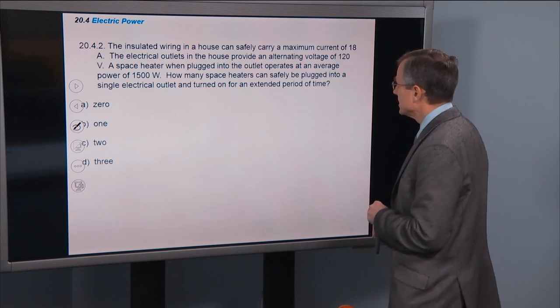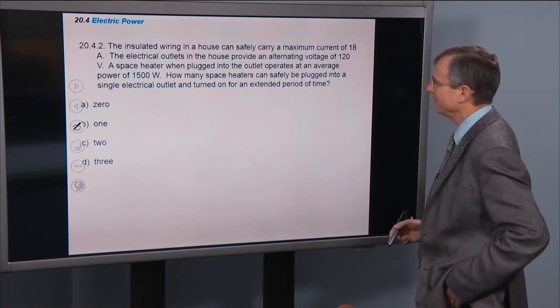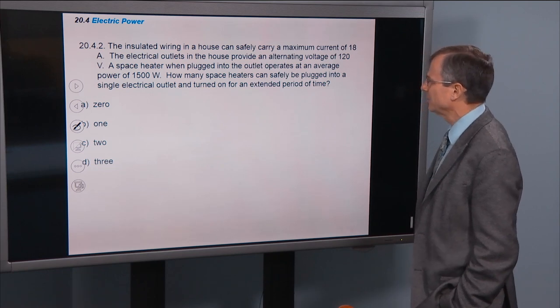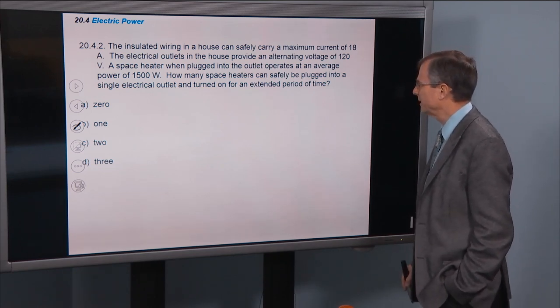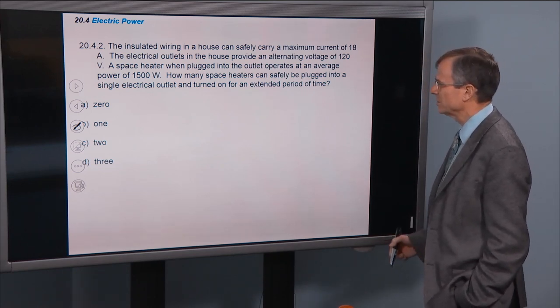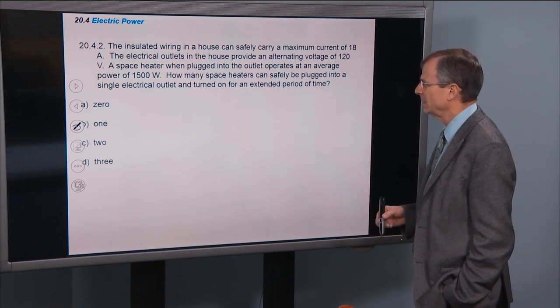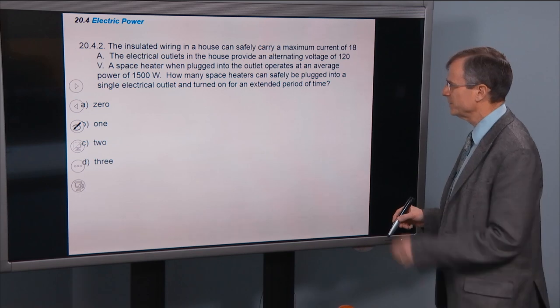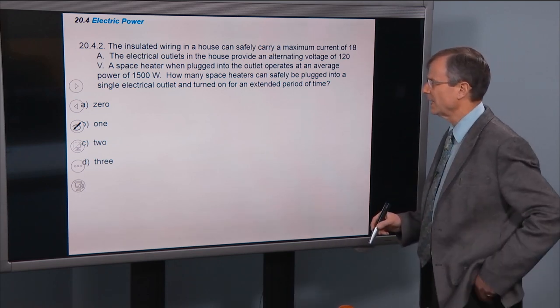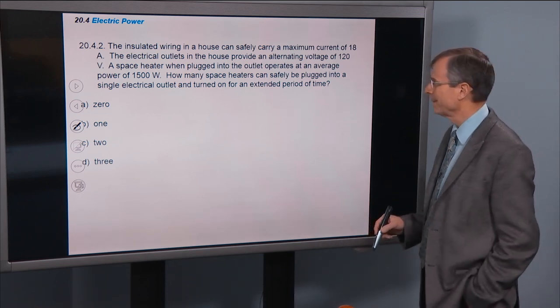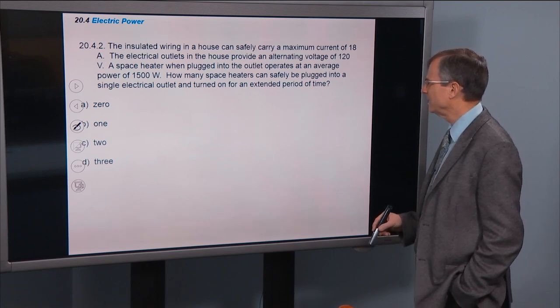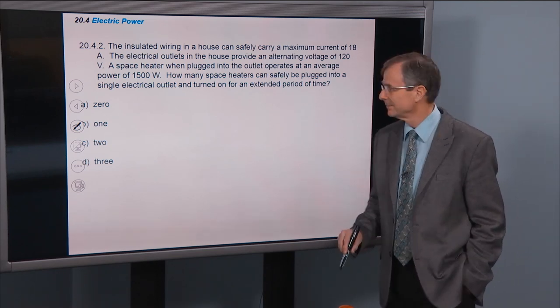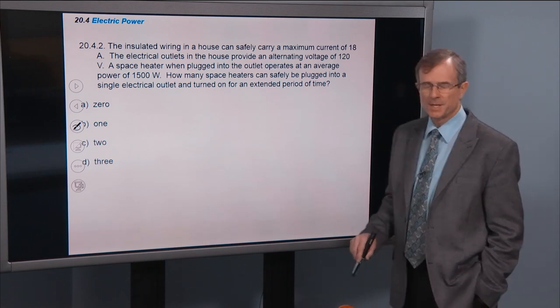Insulated wiring in a house can safely carry a maximum current of 18 amps. The electrical outlets in the house provide an alternating voltage of 120 volts. The space heater when plugged into the outlet operates at an average power of 1500 watts. So how many space heaters can safely be plugged into a single electrical outlet and turned on for an extended period of time?